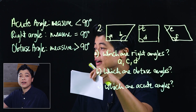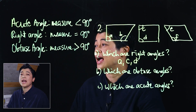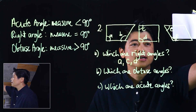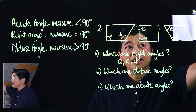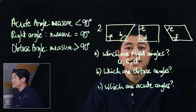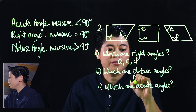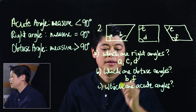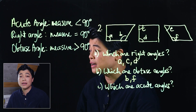The next question asks which ones are obtuse angles. Again, if you put the corner and you see more than the angle, then that means that's an obtuse angle. Looking here, F shows more than the edge of the right corner, so F is an obtuse angle, and so is B.